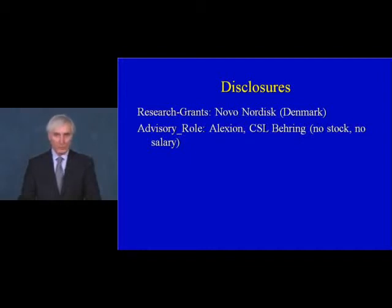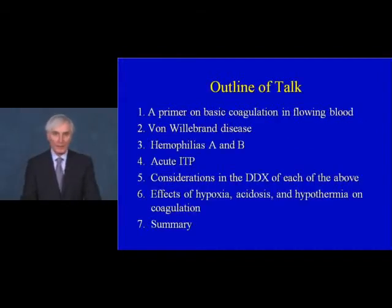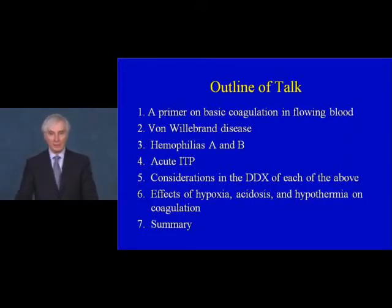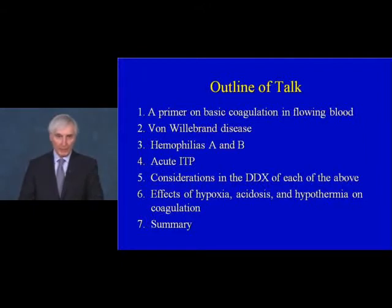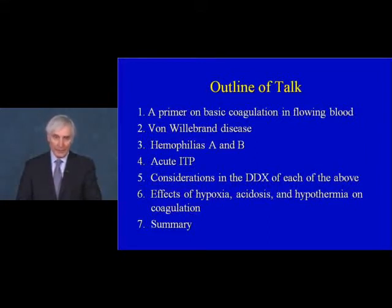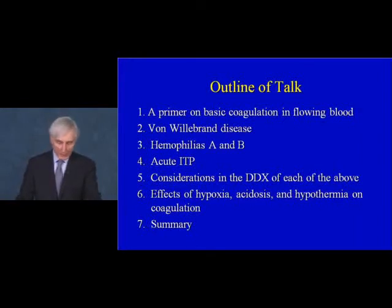My topic today is bleeding disorders in children. I will begin with a primer on basic coagulation and flowing blood, then discuss three major conditions seen in pediatrics: von Willebrand disease, the hemophilias A and B, and acute ITP. I will then review differential diagnosis considerations, the effects on coagulation of hypoxia, acidosis, and hypothermia as seen in trauma medicine where bleeding is a major cause of early death, and finally a brief summary.